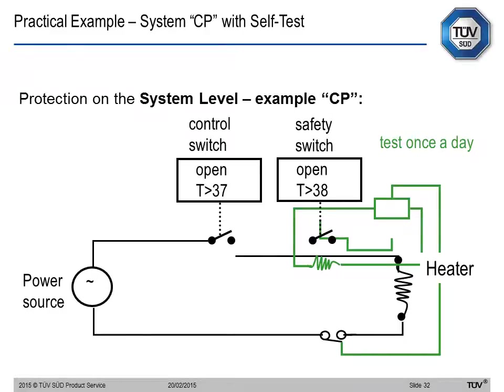In the CP system — one control and one independent protective system — we need a self-test. If the first failure occurs in the control, the protective system raises the alarm and the device goes to repair. If the failure is in the protective system, there is a sleeping fault but the control is still working fine. After MFOT, a second fault must be assumed. A second failure in the protective system again is not a hazard, but if a second failure also occurs in the control, we now have no working protective system and no working control — and therefore we have a hazard. This is why we need a self-test of the protective system within MFOT.